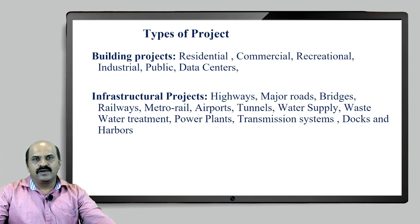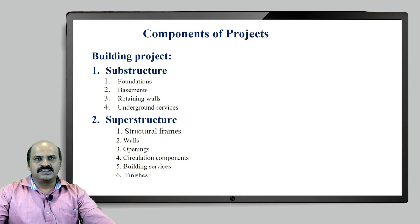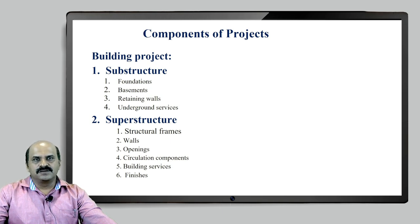You have to be very clear about for which project, or for which services or product development you are working, and accordingly we will go ahead to work on other aspects of automation, which includes components of projects. It is a very important thing to understand the components of projects. For understanding it in a better way, I have given you an explanation of a building project. A building project will be considered physically as part of substructure and superstructure — these are physical components of a project that need to be first seen.